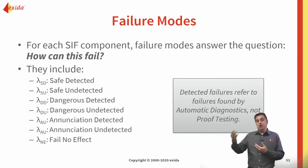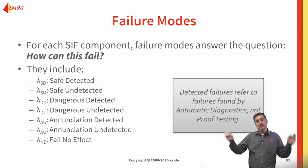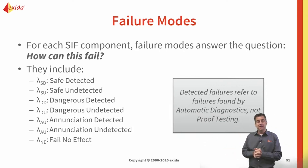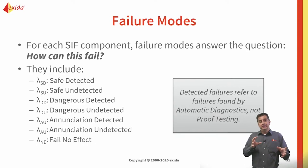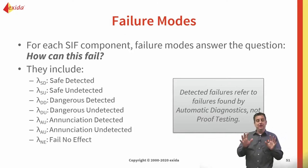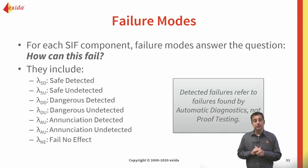For dangerous failures, splitting them into detected and undetected is essential because a dangerous failure won't be noticed during normal operation. You could have a valve out there that is stuck open, unable to go to the safe state, and you simply don't know it because it hasn't been tested or there's been no demand requiring that valve to move. By adding diagnostics to that valve, you may be able to detect some of those failures and convert dangerous undetected failures into dangerous detected failures.